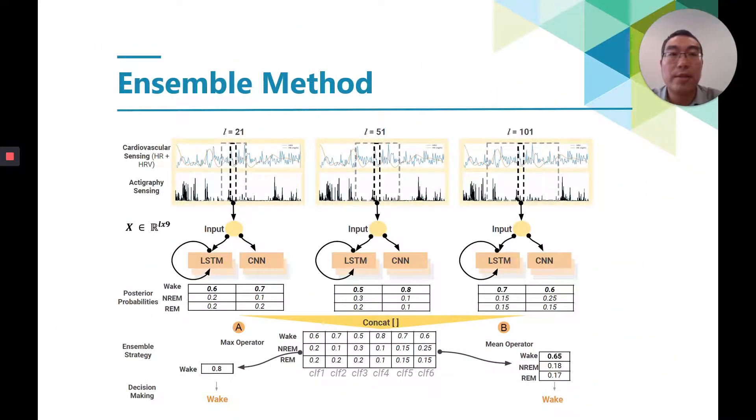We also proposed an ensemble method to combine multiple deep learning classifiers to improve the prediction performance. Those different types of neural network classifiers provide diversified information for the final prediction by giving different window lengths.